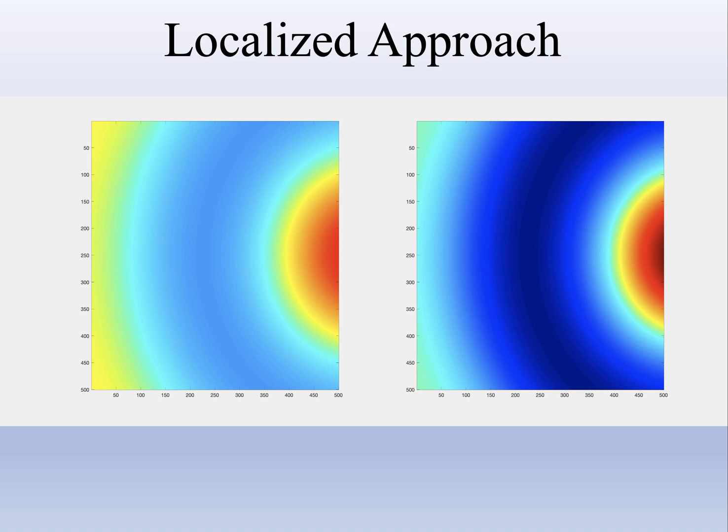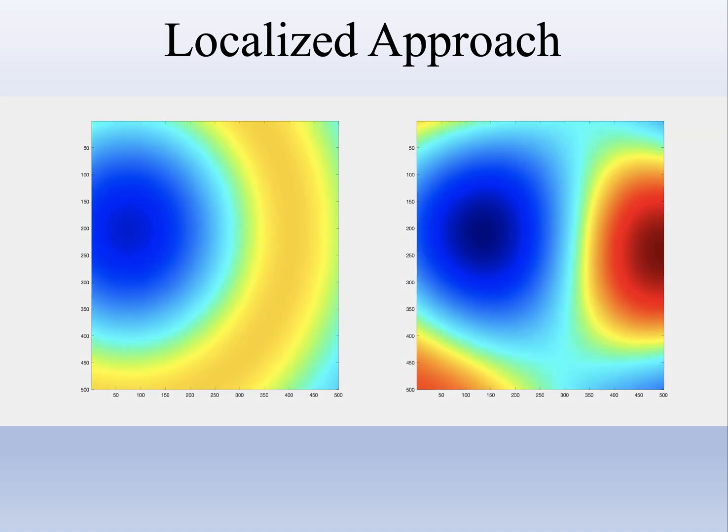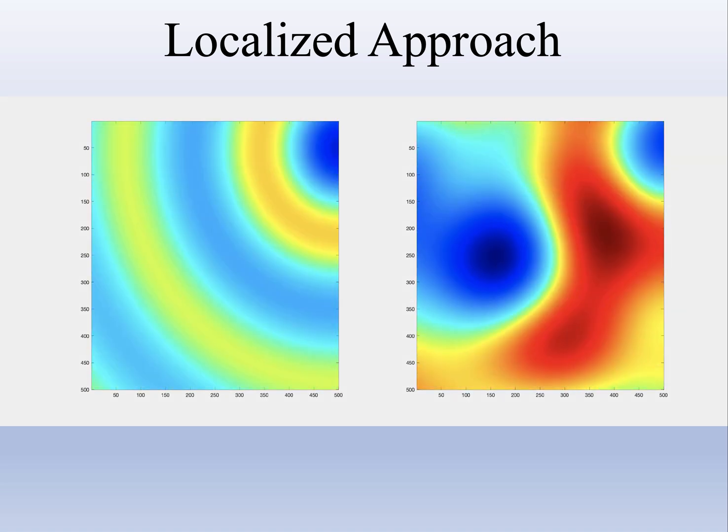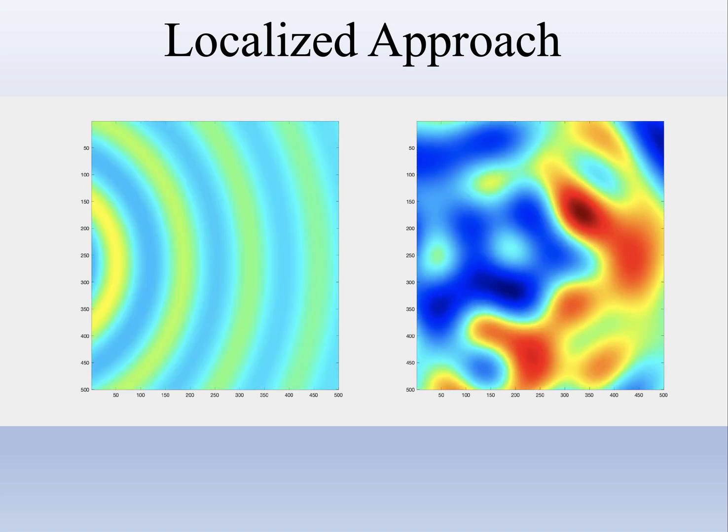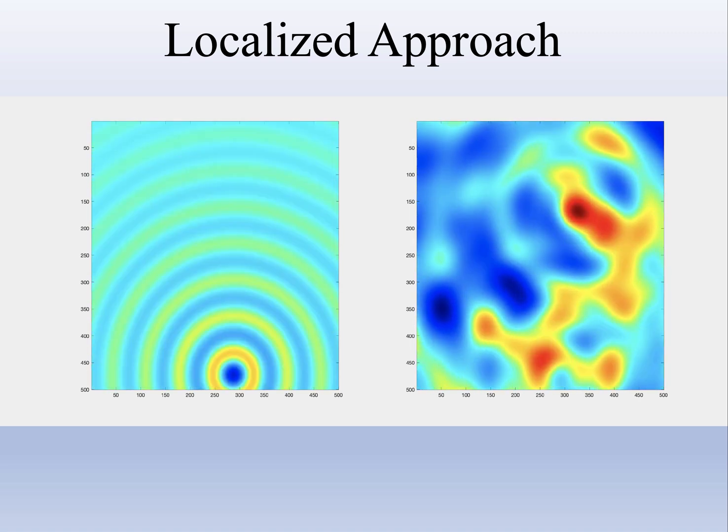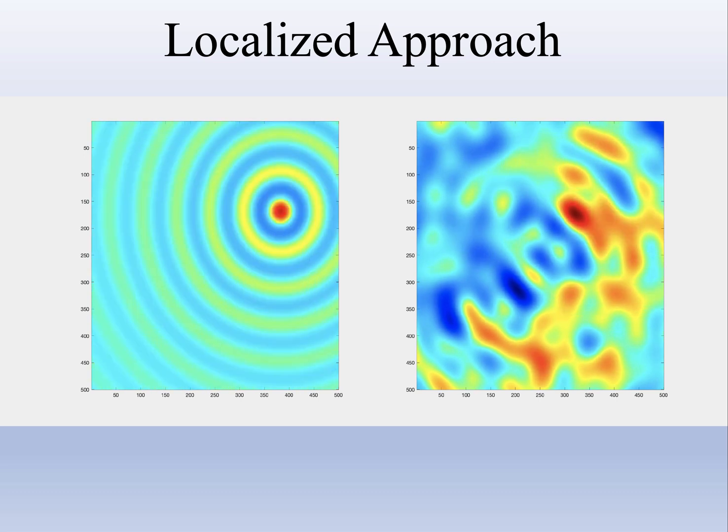This is very much thinking in terms of the emitting region as being a series of patches - big patches and small patches. You can have these localized functions that are all added together, starting with the low frequencies and going to higher spatial frequencies.